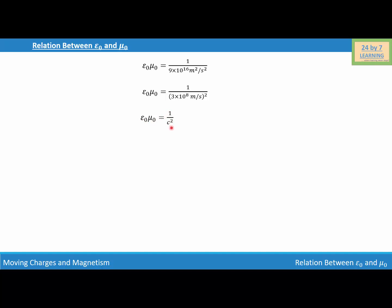Let's find the value of c in terms of epsilon 0 and mu 0. We get c squared is equal to 1 over epsilon 0 mu 0. Therefore, c is equal to 1 over the square root of epsilon 0 mu 0. This is how we establish the relationship between epsilon 0, mu 0, and the speed of light.